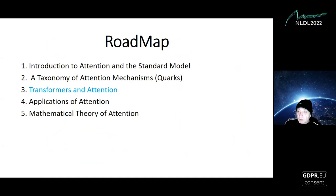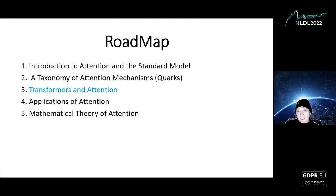Both mechanisms can be added to the standard model, and this is exactly what happens in transformers — the current state of the art in attention architectures. I'm going to move to transformers now, unpack them from a neural network point of view, and show where attention comes in as exactly the type of mechanism I just described: multiplication of outputs by outputs or multiplication of synaptic weights by outputs.